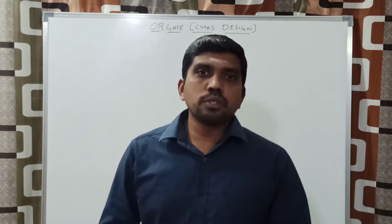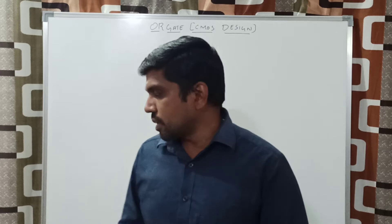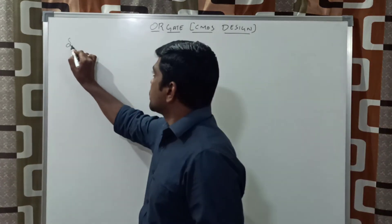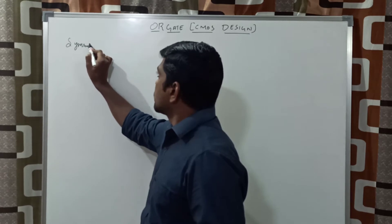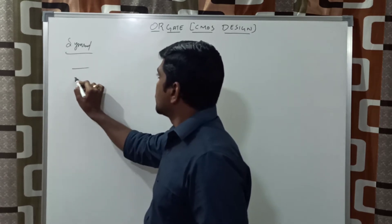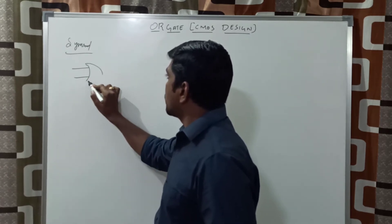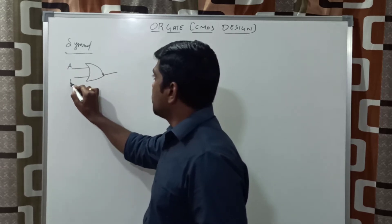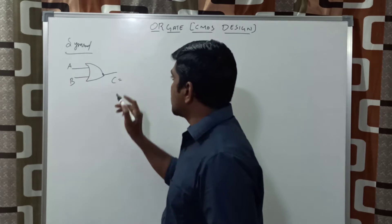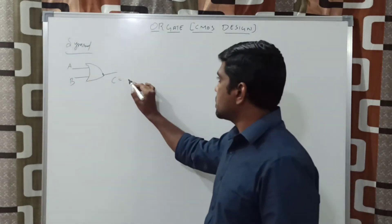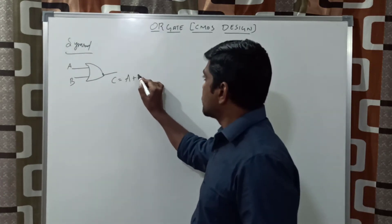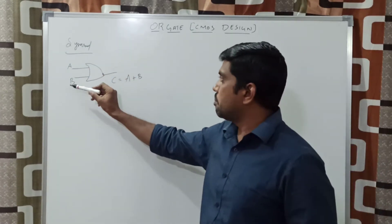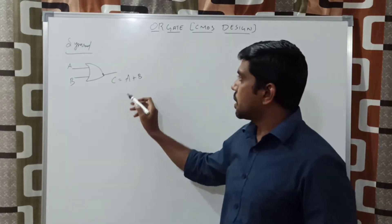In this video also, we follow some steps. First, draw the symbol of OR gate. This is a two-input OR gate. The inputs are named A and B, and you get the result C. The equation of C is A plus B. You can assign the two inputs A and B and get the result C equal to A plus B.